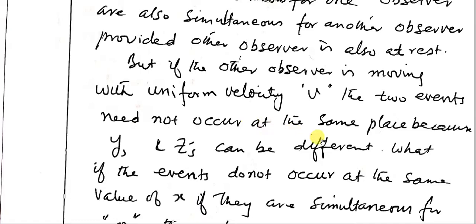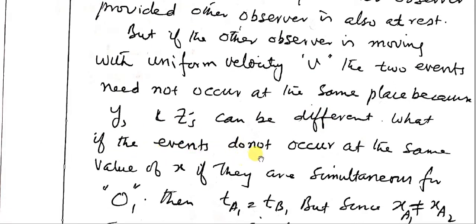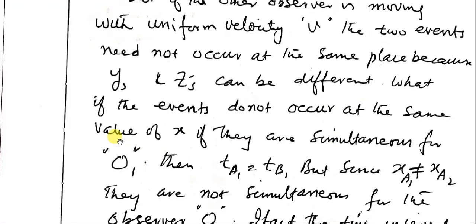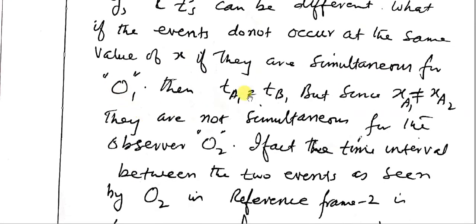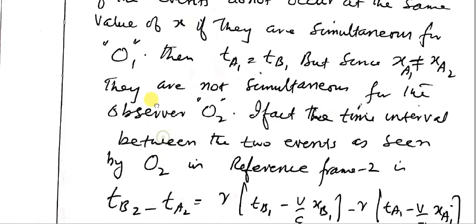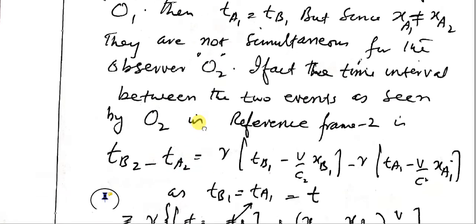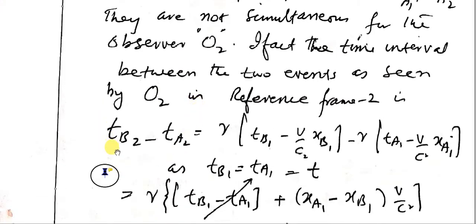If the other observer is moving with uniform velocity, the two events need not occur at the same place, because the y and z values can be different. If events do not occur at the same value of x, and they are simultaneous for O1 — meaning t_a1 equals t_b1 — but since x_a1 is not equal to x_b1, they are not simultaneous for observer O2. The time interval between the two events as seen by O2 in reference frame 2 is given by the difference of those two equations.